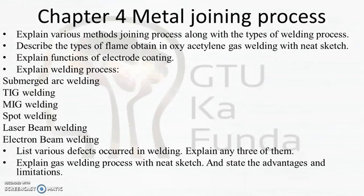For chapter four, Metal Joining Process, questions include: explain various metal joining methods along with types of welding processes, describe the types of flame in oxy-acetylene welding, electrode coding, and various types of welding processes — they can ask any welding process or ask for differences between MIG and TIG welding. For seven-mark questions, you should be prepared for laser beam welding and electron beam welding.